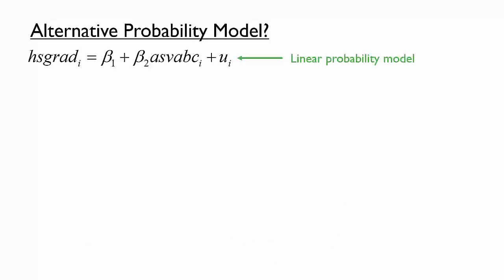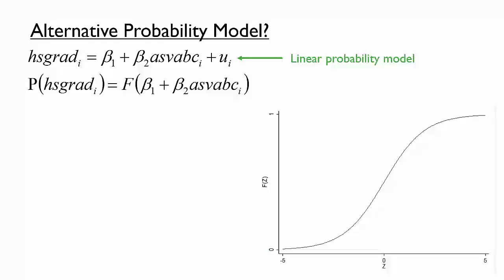Here is a proposal for fixing the problem of predicting the probability of an event. Instead of a linear probability model, where the probability of a high school diploma depends linearly on the ASVAB score, let's assume it is a nonlinear function. That nonlinear function f should approach one on the right side and zero on the left side. One such function is a logistic function: f(z) = 1 / (1 + e^(−z)).